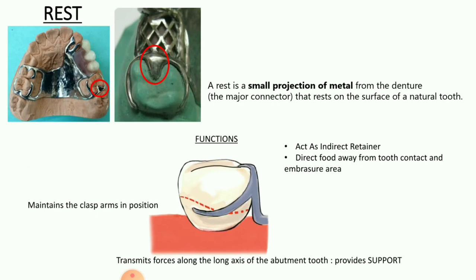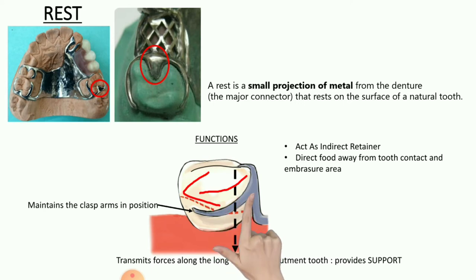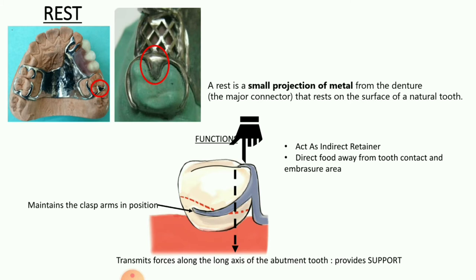Moving on to the rest. The rest is a small projection of metal from the denture or the major connector that rests on the surface of the natural teeth. The main function of the rest is to transmit the force along the long axis of the abutment tooth, hence it exclusively provides support to the prosthesis. The other functions of the rest are: it maintains the clasp arms in position — as we can see in the figure, the clasp assembly arises from the rest. Rest sometimes also acts as an indirect retainer, and it directs food away from the tooth contact and embrasure area.